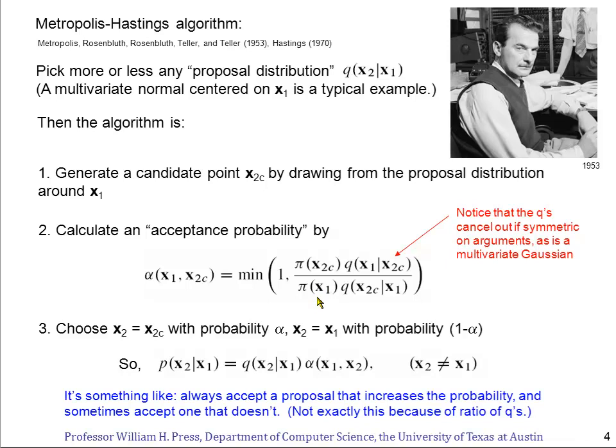Now how do we finish this? What do we do with this acceptance probability? Well we have a candidate X2, and we make that with probability alpha, the acceptance probability, we make that the actual next step in the chain. And with the remaining probability 1 minus alpha, we just stand pat. We stay on exactly the same position that we are already on.